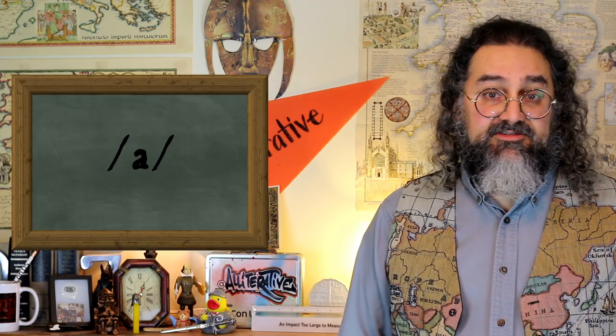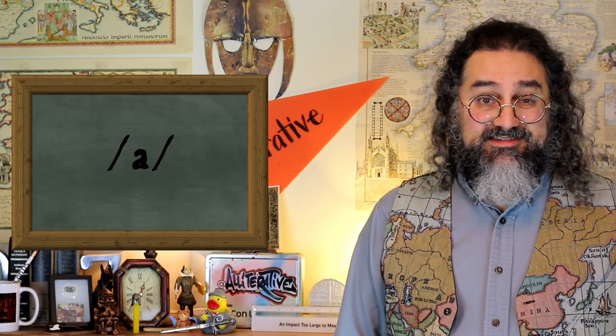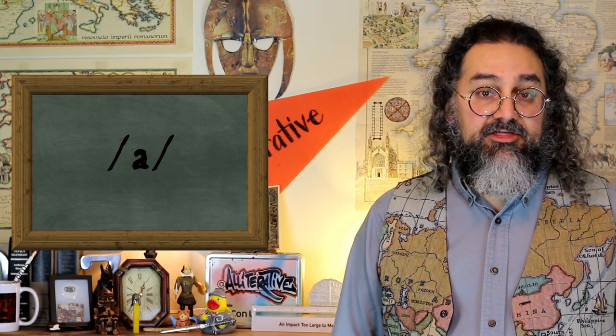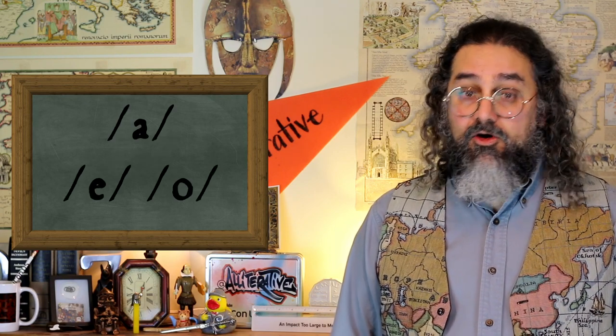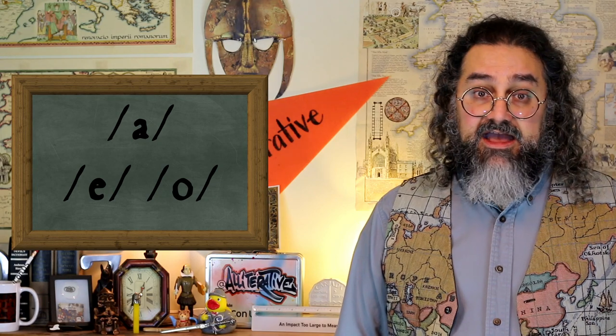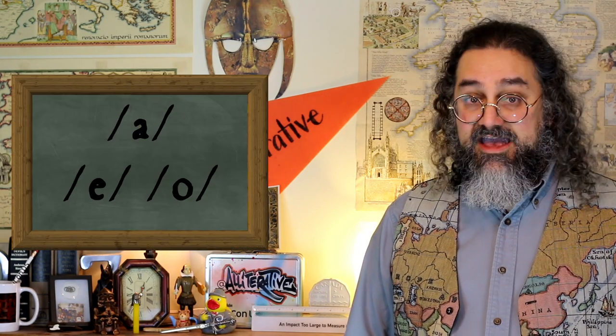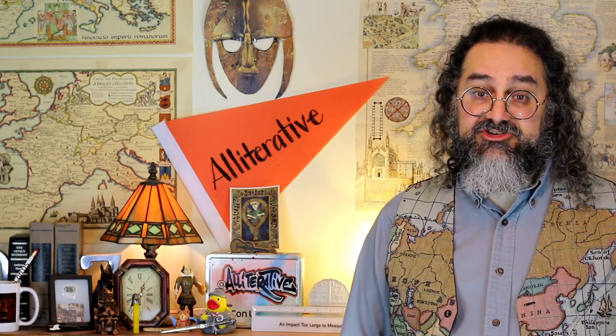But a in Sanskrit corresponds seemingly randomly with a, e, and o in the cognates, and coming up with a regular sound change to explain this has proved difficult. However, if we instead assume that the Proto-language had the original vowels a, e, and o, which were preserved as distinct in some of the Indo-European sub-branches but changed as they developed into the Indic branch, that would solve the problem.